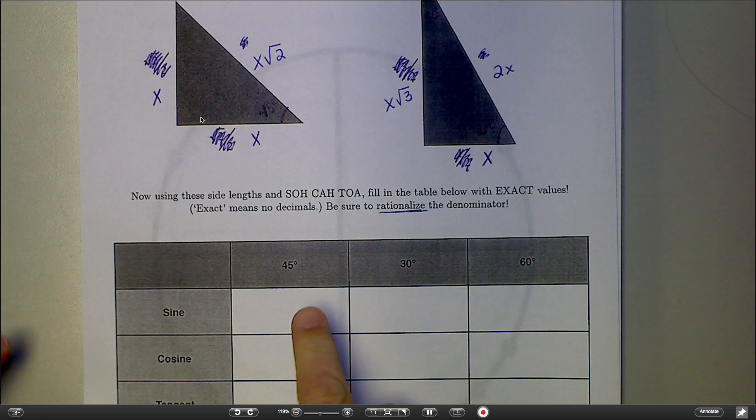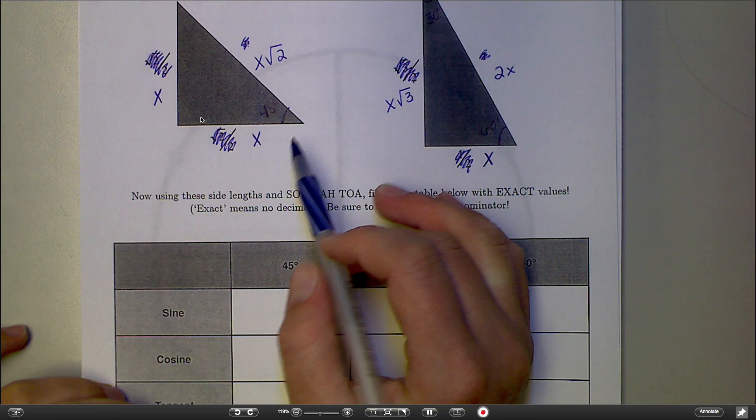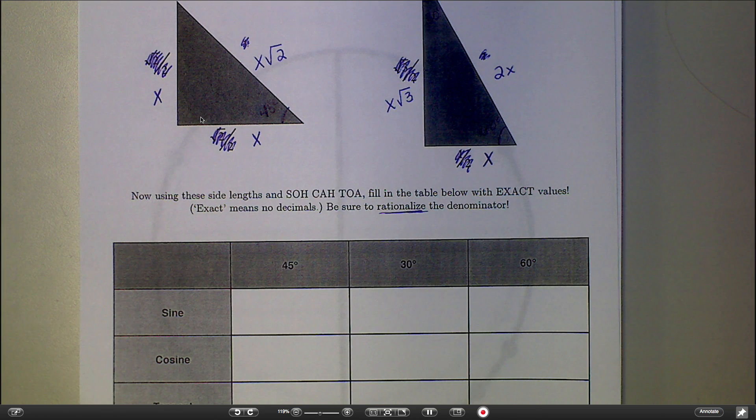Then we're going to put the exact value down here. You may remember from back in Chapter 8, or a couple times this year, we've talked about exact values not being decimals. That's why we're not just typing sine of 45 into our calculator. The exact values are like the things that are found on the unit circle.